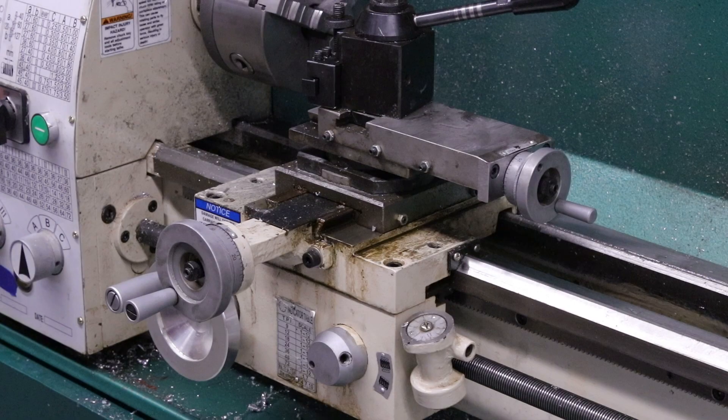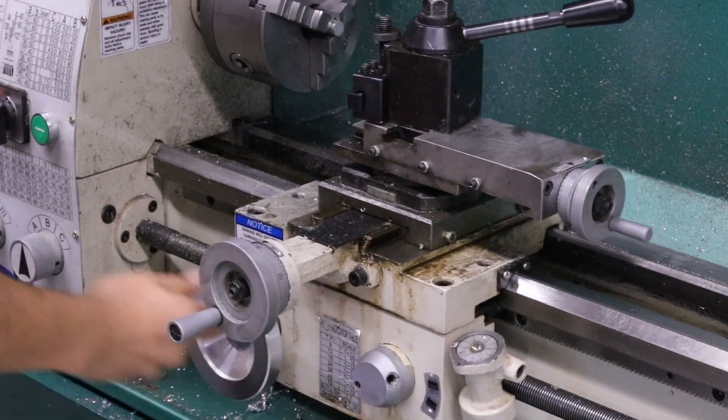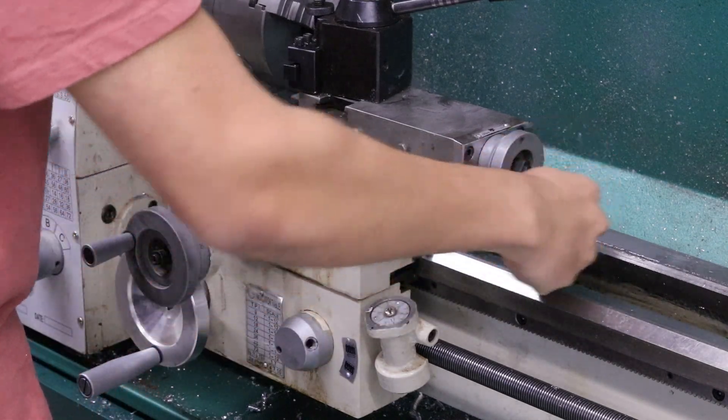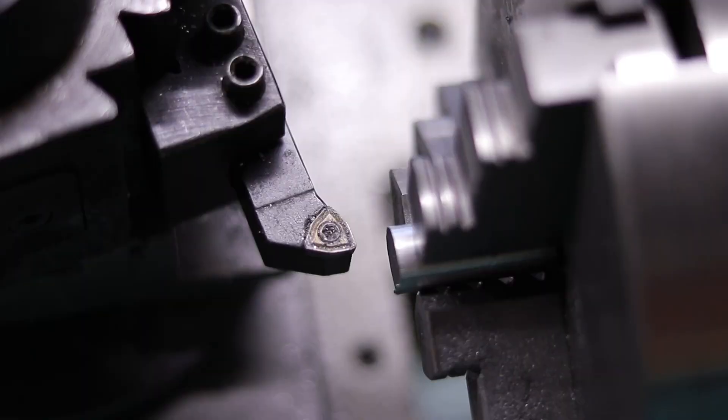There's three knobs I'll use to maneuver my tool. This bottom one allows me to quickly jog big distances. This middle one moves perpendicular to the part, and this small one acts as a fine control in the parallel direction. Now that our tool and stock are mounted, we're ready to begin cutting.